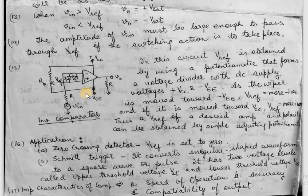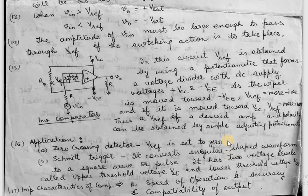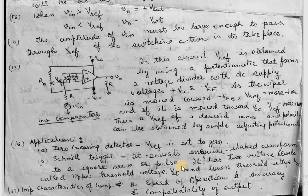Now we will discuss applications of the comparator. The first application is the zero crossing detector, where V-reference is set to zero — whenever the signal crosses zero the switching action takes place, detecting that the input voltage has turned zero. The second application is the Schmitt trigger, which converts irregular shaped waveforms to a square wave or pulse. It is a modified form of comparator and has two voltage levels: the upper threshold voltage and the lower threshold voltage.